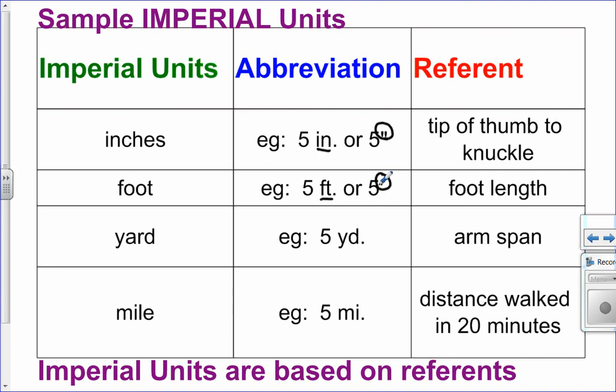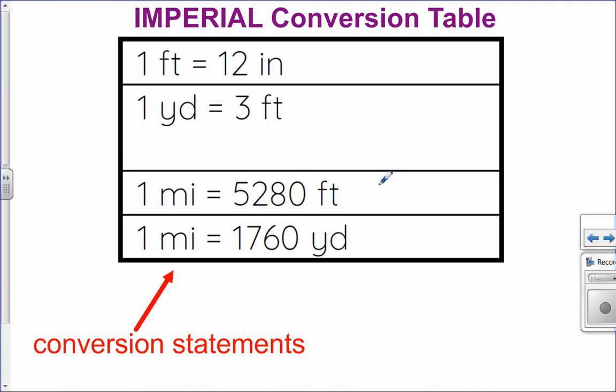And a mile, that's about the distance that you can walk in 20 minutes. So imperial units are all based on referents. But we do have some conversion statements that help us. So these are all on your formula sheet. We have feet to inches, yards to feet, miles to feet and miles to yards. These conversion statements are going to help us convert between the various measurements.